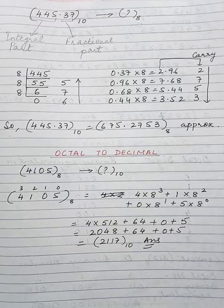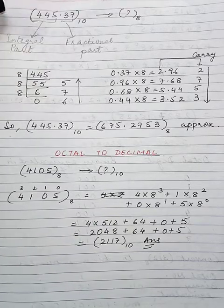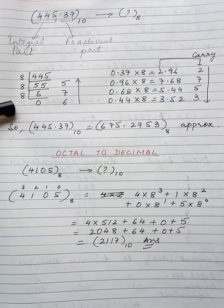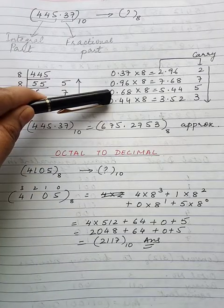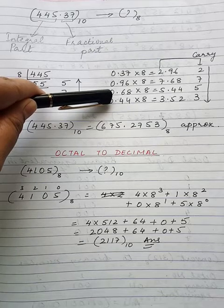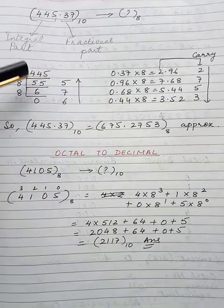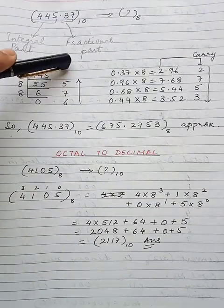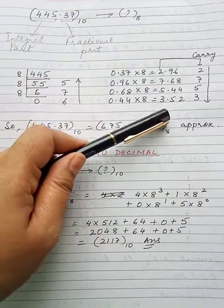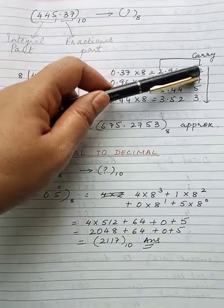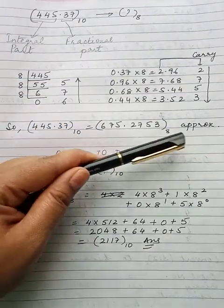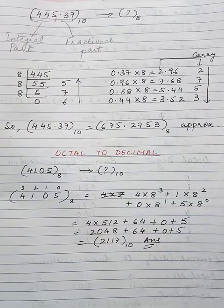Now in this question 445.37 there is a decimal point, meaning it has an integral part as well as a fractional part. To convert it into its octal equivalent, separate the integral part and the fractional part first. Then divide the integral part by 8 as before, and multiply the fractional part by 8 as we did for binary. The remainder values are written from bottom to top and the carry values from top to bottom. If we are not getting 0 we stop after 4 values and write 'approx'. This is how it is converted into its equivalent octal.